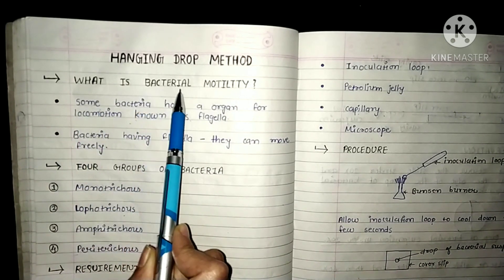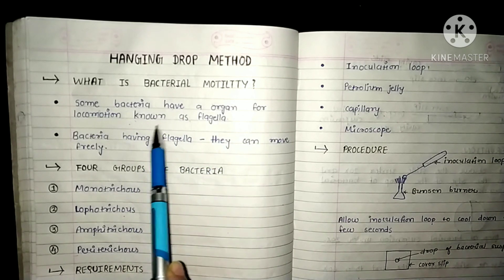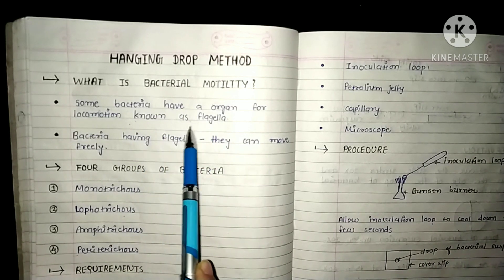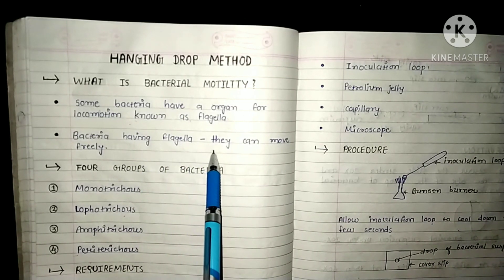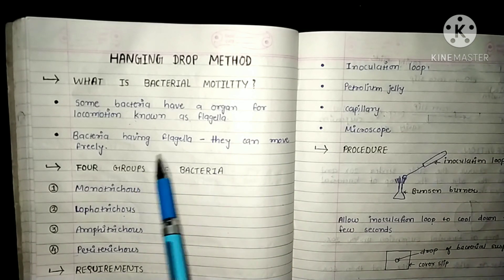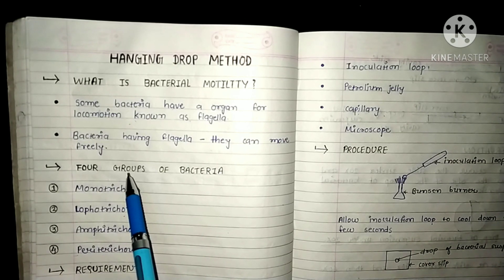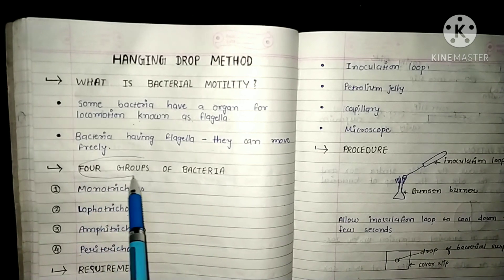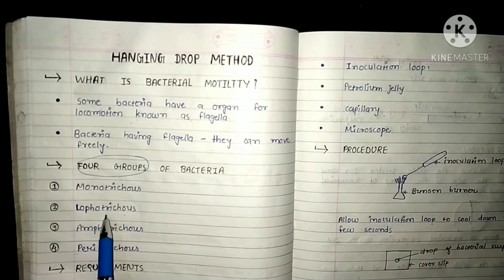What is bacterial motility? Some bacteria have an organ for locomotion known as flagella, and bacteria having flagella can move freely from one place to another. On the basis of the number and arrangement of flagella on the surface of bacterial cells, bacteria can be divided into four groups.